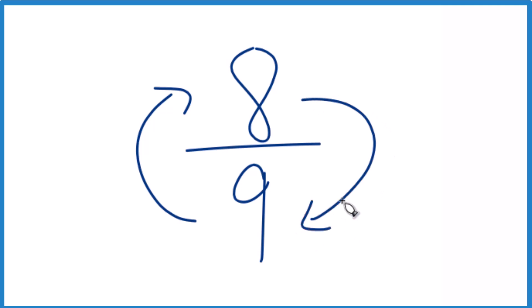Here say you write the reciprocal for eight-ninths. So when we write the reciprocal for a number like eight-ninths, or really any number, we move the denominator to the top, the numerator to the bottom.